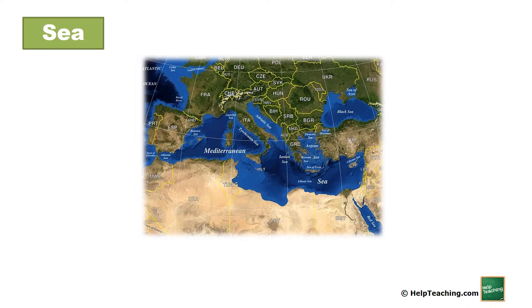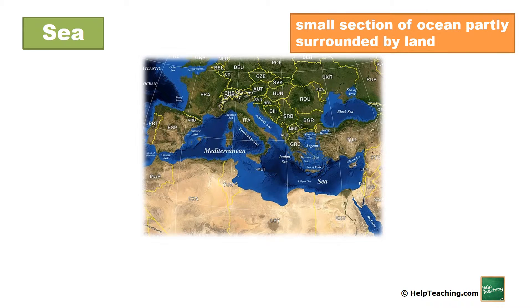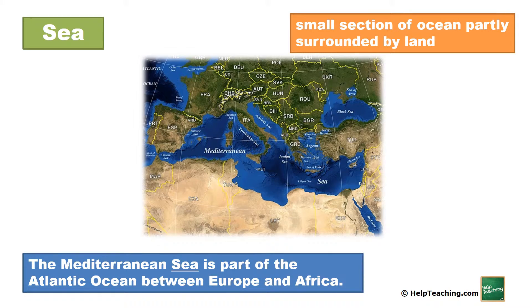Sea: Small section of ocean partly surrounded by land. The Mediterranean Sea is part of the Atlantic Ocean between Europe and Africa.